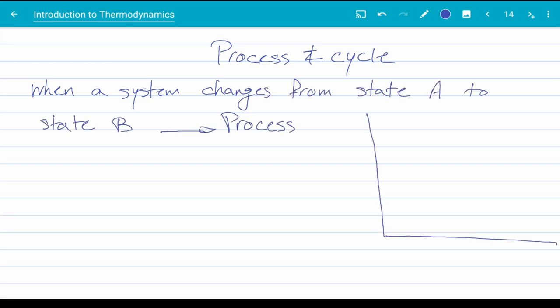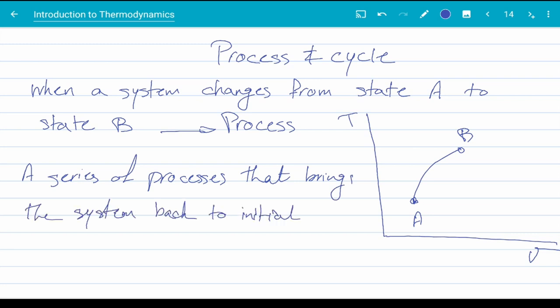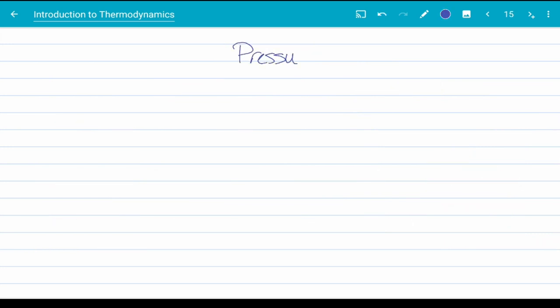Now, let's define process and cycle. When a system goes from state A to B, we call it a process. When a system undergoes a number of processes and returns to the initial state A, we call the set of processes a cycle. Now, don't forget to put arrows on the processes so you know which direction it's going.